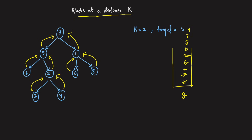We continue: 0 has no children, 8 has no children, 7 has no children, 4 has no children. Once we have done the level order traversal, we have all the parent pointers. From node 5 we know the parent; from node 2 we know the parent. So if we need to move from 2 upward, 2 can go to 5, 5 can go to 3, and then 3 to 1 — we can traverse both upward and downward. The parent pointer step is complete.